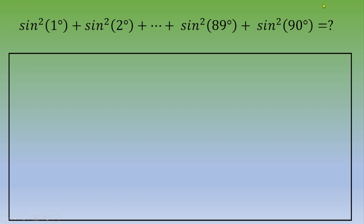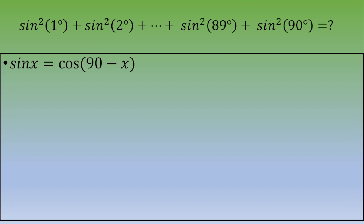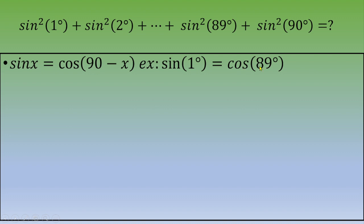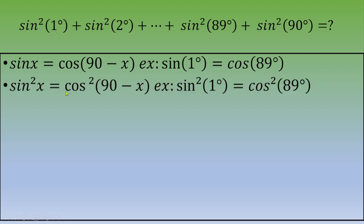First, we are going to recall some trigonometric formulas. For every value of x, sine of x equals cosine of (90 − x). As an example to illustrate: sine of 1° is equal to cosine of 89°.